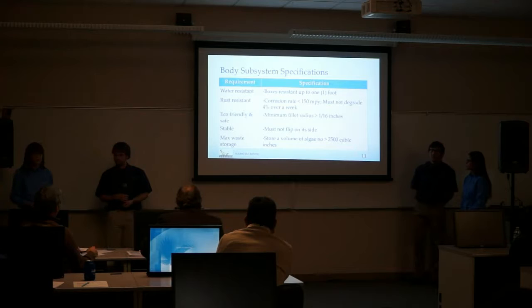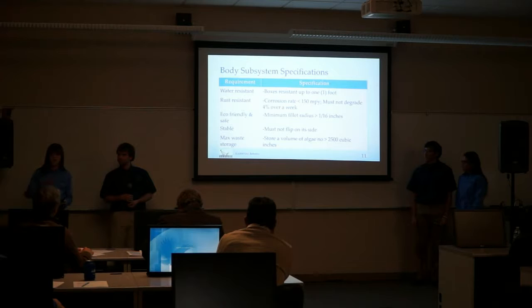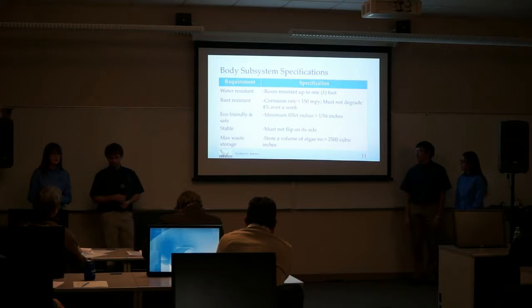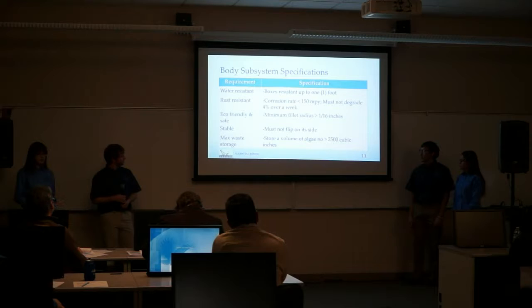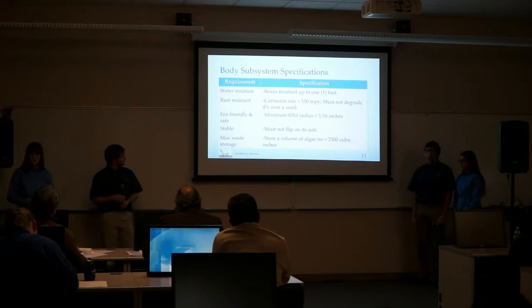For stability, we want the robot to remain stable even if we place a weight equivalent to 25% of its total weight to one side. We want to limit the waste storage volume to 2,500 cubic inches — currently our design is about 1,000 to 1,550 cubic inches. For waste storage, the collection mechanism must go 2 inches below the surface, collect at least 0.1 pounds per hour, and retain at least 80% of algae using a mesh with about 30 openings per inch.